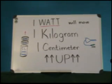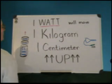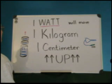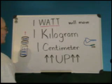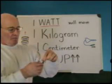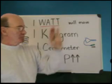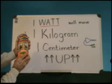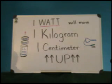Well, it's about this much power. One watt will move one kilogram one centimeter up. A kilogram is about 2.2 pounds and a centimeter is about the diameter of a triple-A battery — very tiny indeed. To give you some idea, that's about this much weight in cat food, and it'll move it four tenths of one inch.